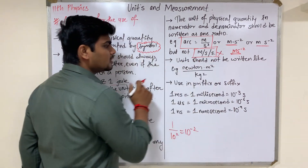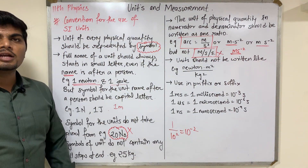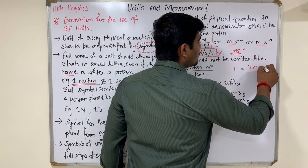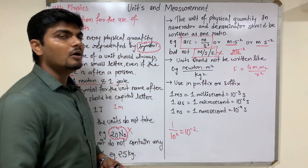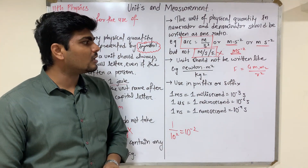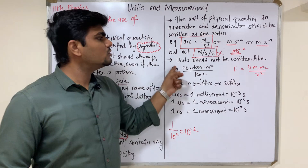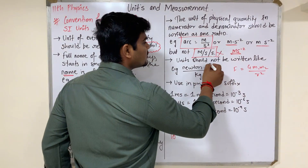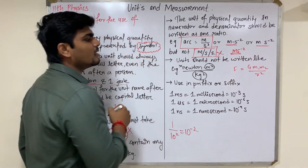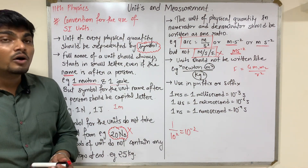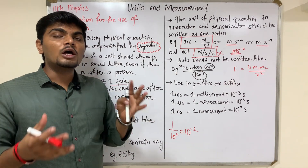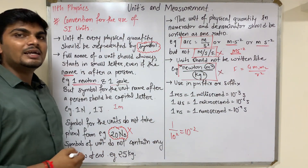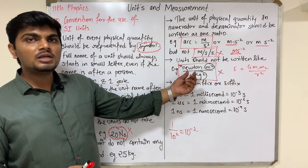Another convention: units should not be written by mixing full forms and symbols. For example, the gravitational constant G has units that involve Newton, meters, and kilograms. If you write some parts in full form and others as symbols — like 'Newton m² per kg²' — that is the wrong method. You must either use all full forms or all symbols consistently.